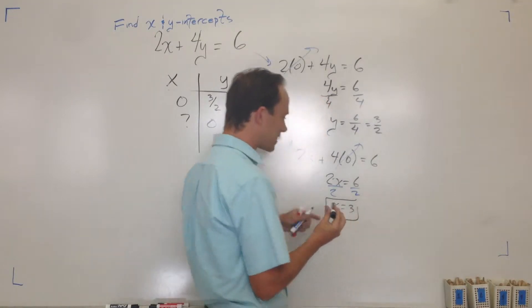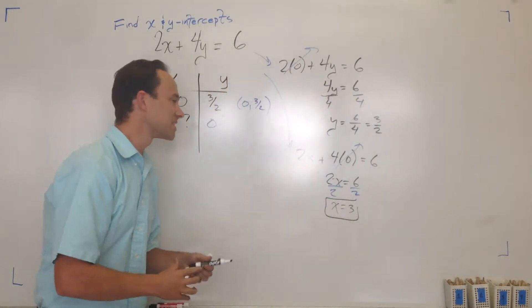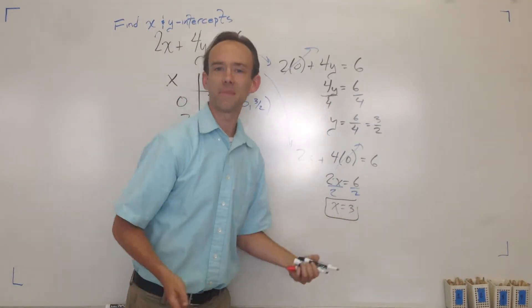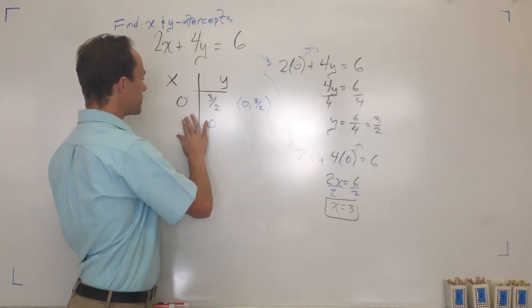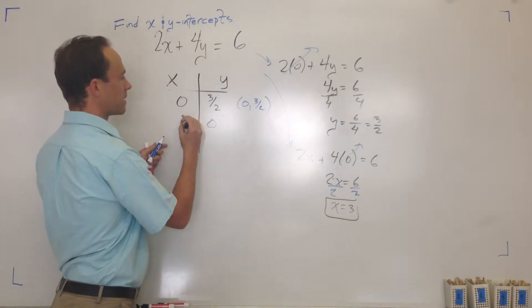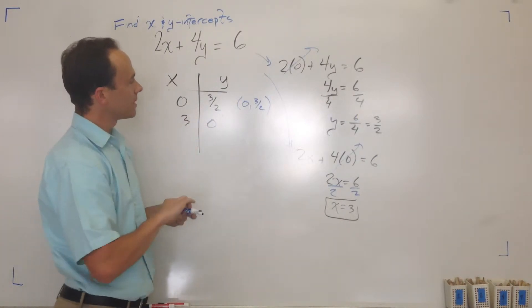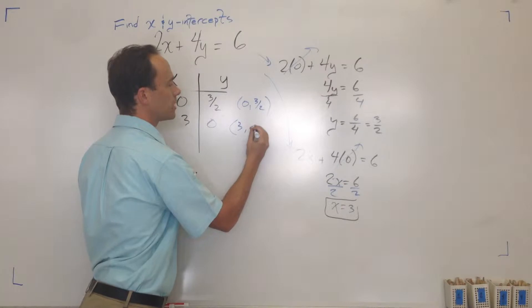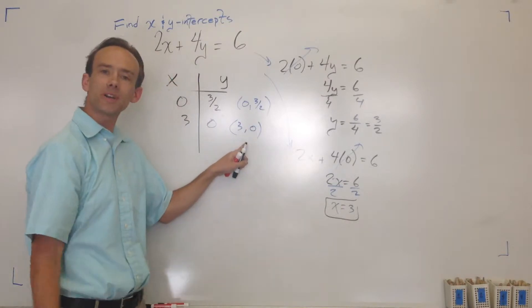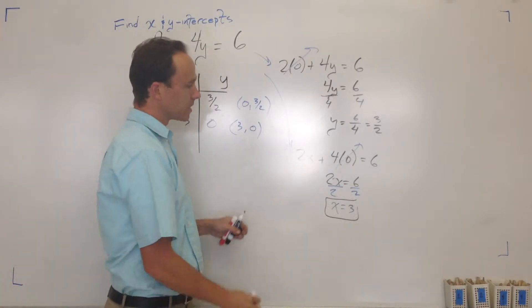And we get x equals 3. That's it. As a coordinate point, that's (3, 0) — that's your x-intercept.